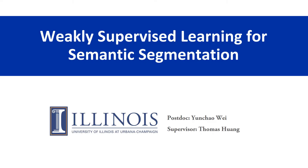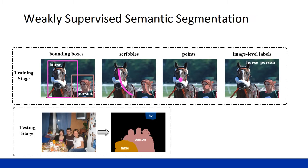I'm Yun Chao, a postdoctoral researcher from UIUC Image Formation and Processing Group led by Tom Suhrong. This work provides weakly-supervised solutions for semantic segmentation. To relieve the demand for expensive pixel-level annotations, weakly-supervised information provides some promising solutions.